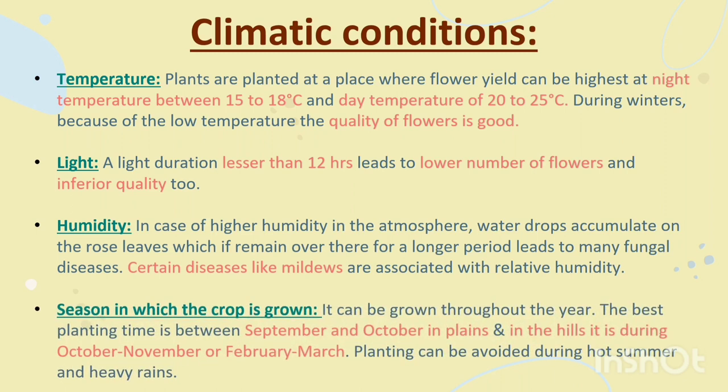Season in which the crop is grown: it can be grown throughout the year. The best planting time is between September and October in plains, and in the hills it is during October to November or February to March. Planting can be avoided during hot summer and heavy rains.